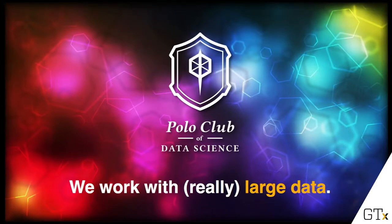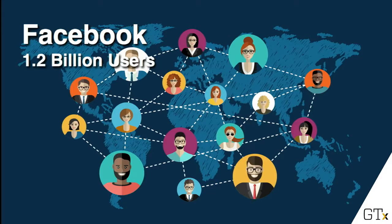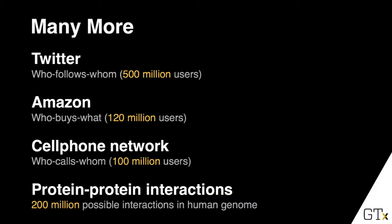We work with really large datasets. Some data you might be familiar with would be the internet — a 50 billion web page dataset where nodes are web pages and links are web links. Or a Facebook graph with 1.2 billion users, where users are nodes and edges represent friendships. There are many more datasets like this: Twitter (who follows whom), Amazon (who buys what, connecting customers to products), cell phone networks (who calls whom), or in biology, protein-protein interactions.